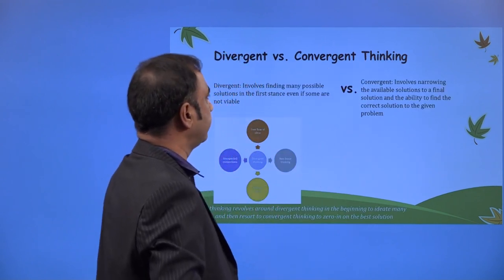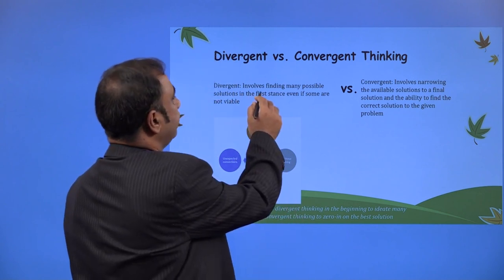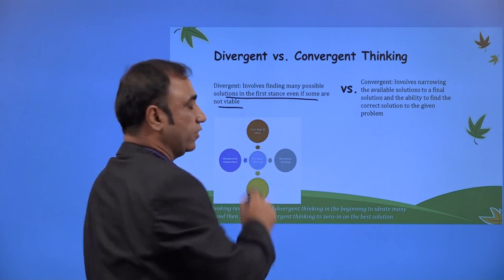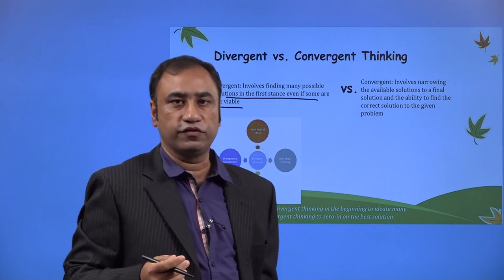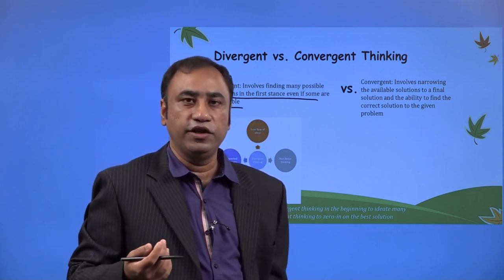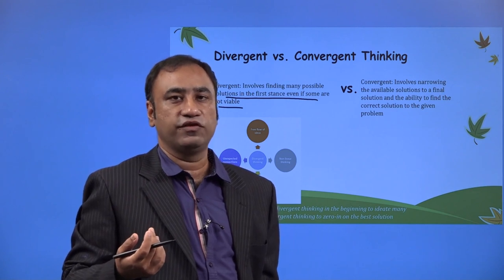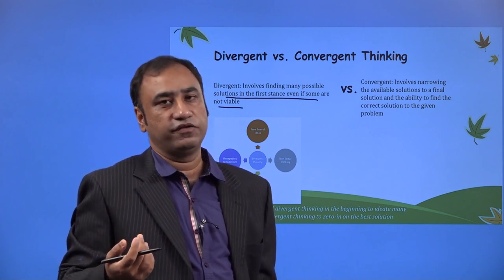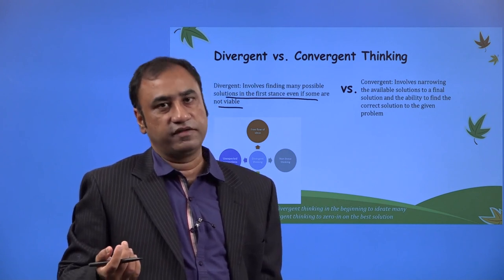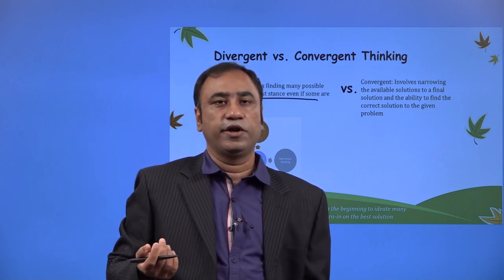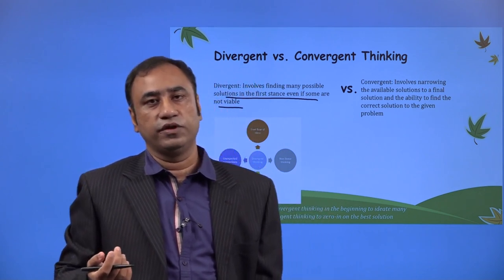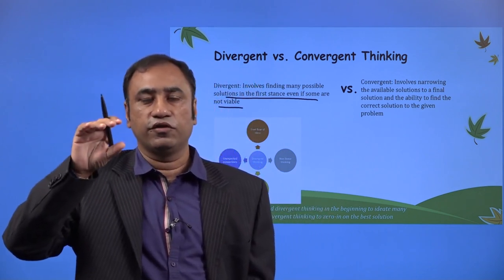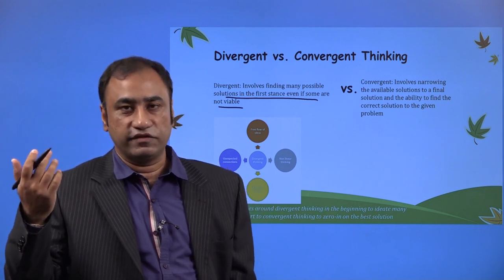Divergent versus convergent. Divergent involves finding many possible solutions at first, even if some are not viable. In the divergent process, you keep on finding new ideas. There can be multiple divergent ideas — some might be viable, some might not be viable. Depending upon what is viable and feasible, you slow down and make choices.